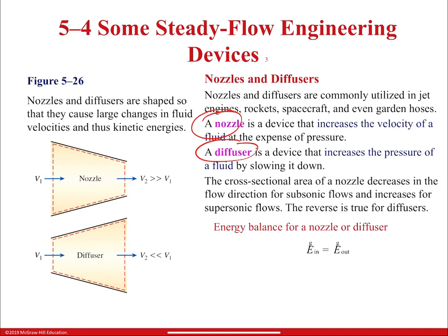The cross-sectional area of a nozzle decreases in the flow direction for subsonic flows and increases for supersonic flows — the reverse is true for diffusers. The energy balance for nozzles and diffusers: energy in equals energy out. Nozzles and diffusers work in opposite ways — one increases velocity at expense of pressure, the other does the opposite — but both work under the same equations for different applications.